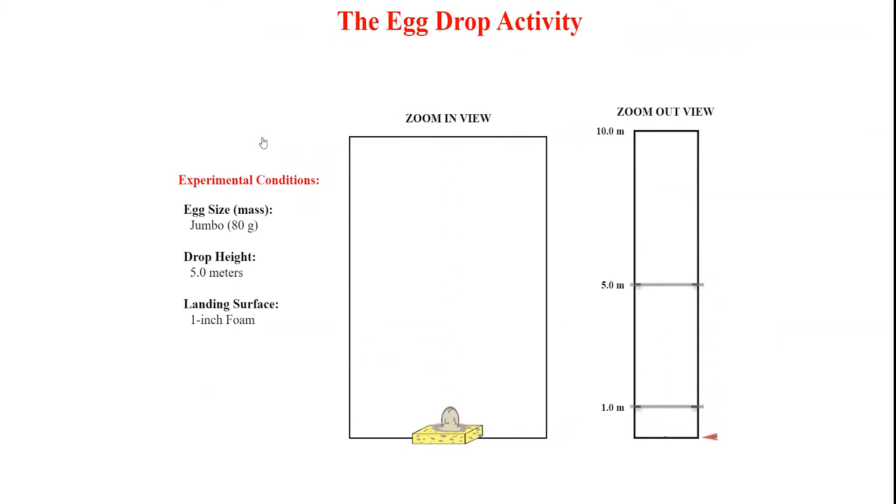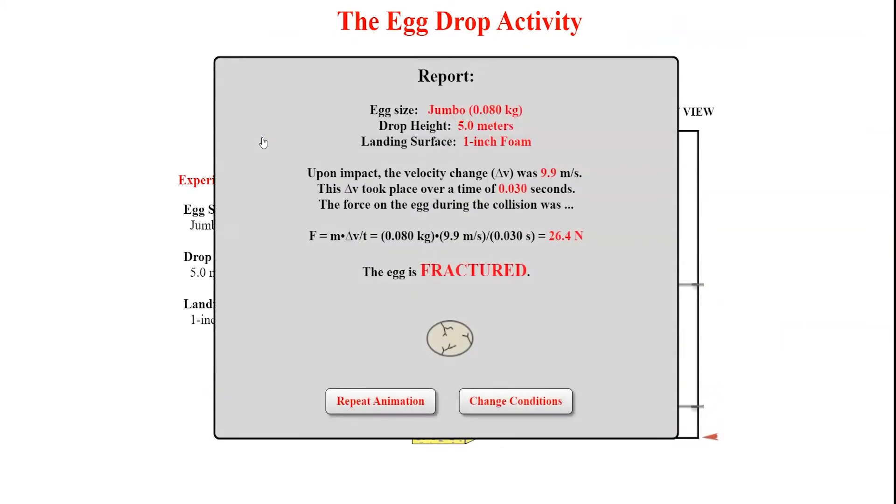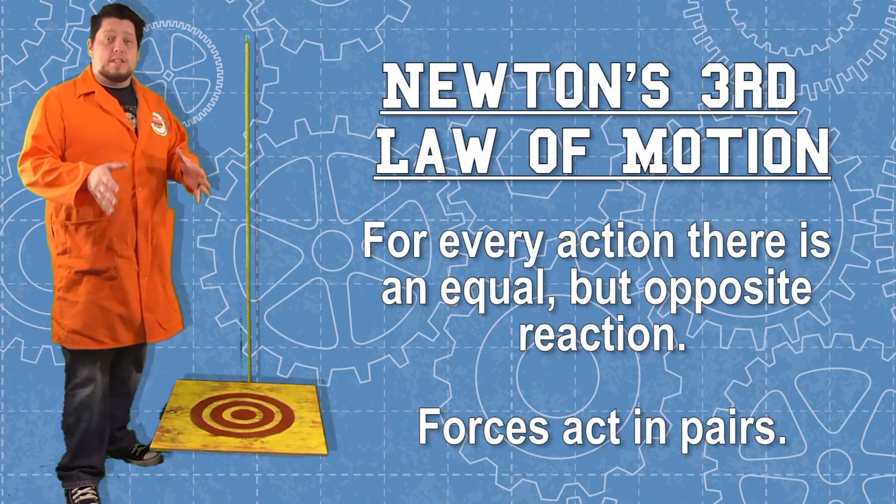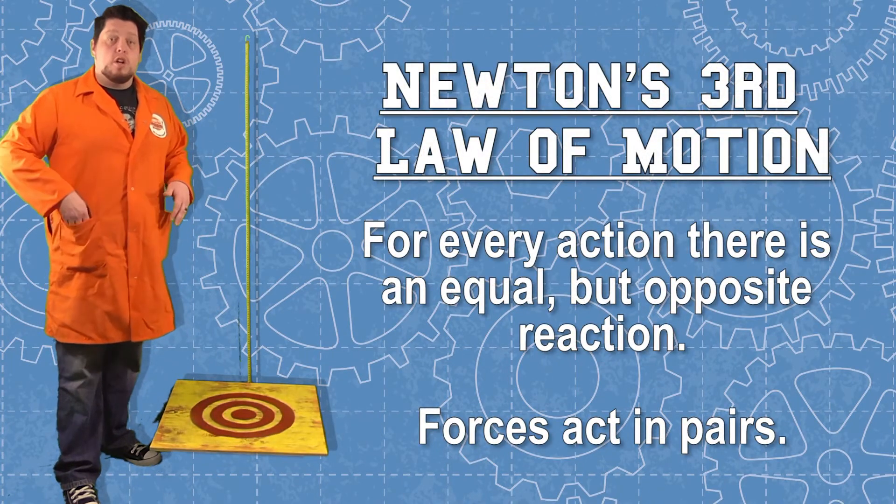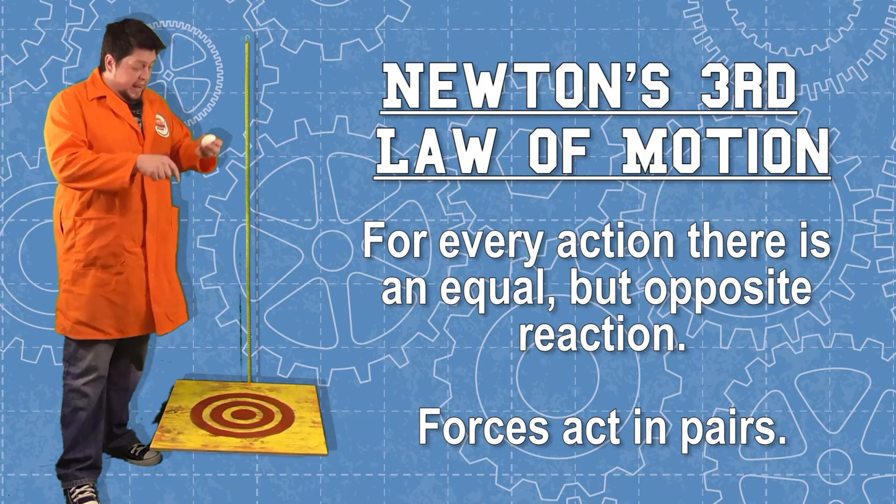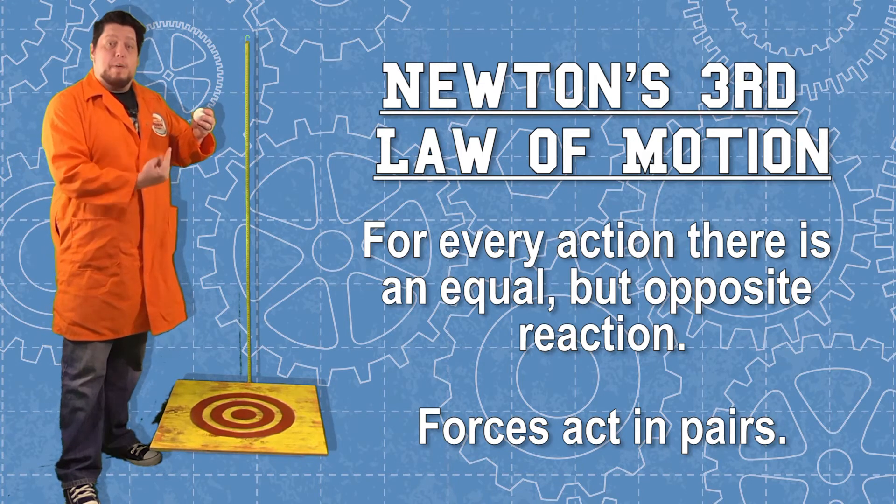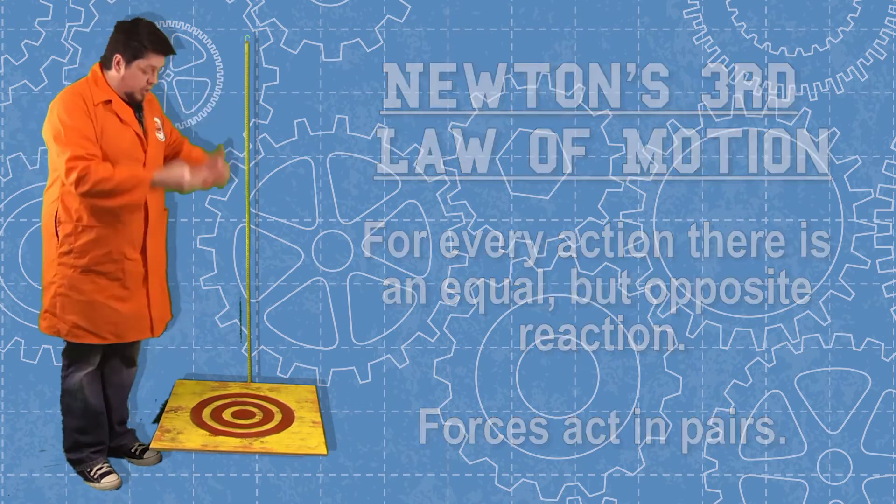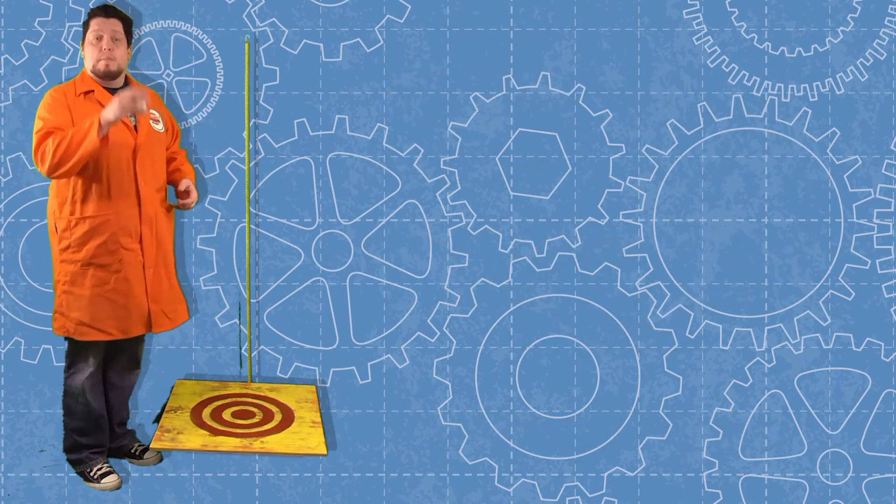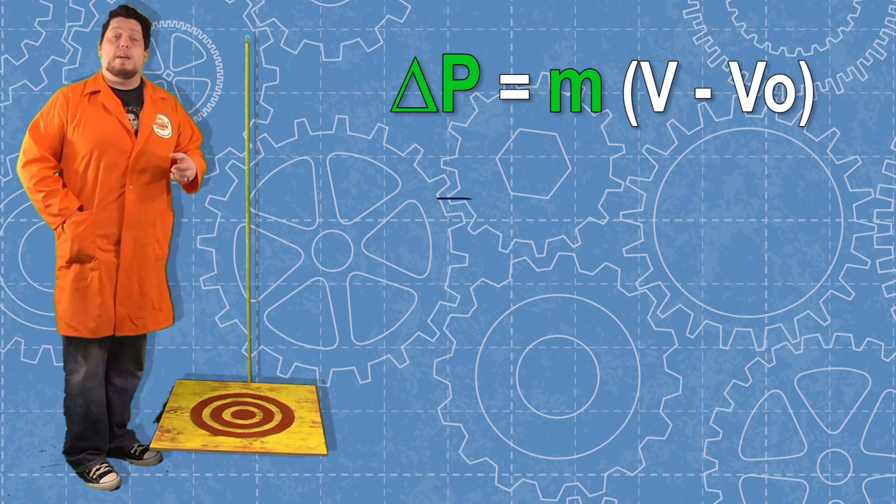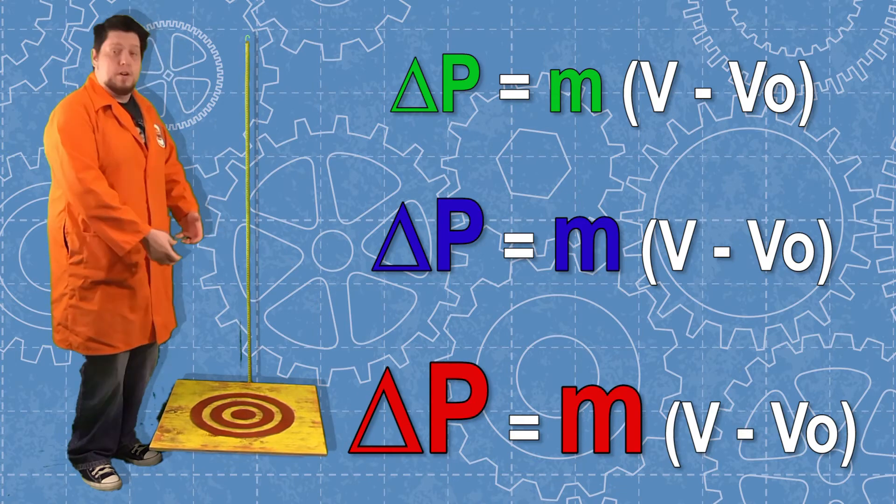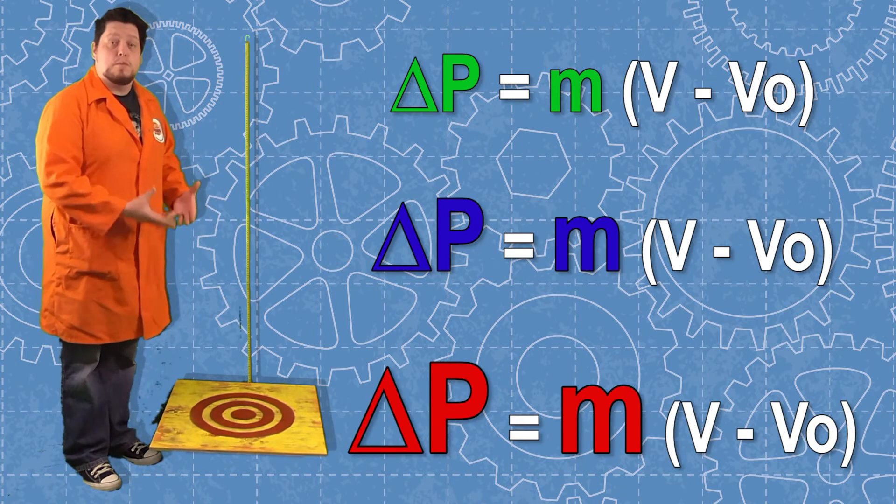According to Newton's third law, for every action, there's an equal but opposite reaction. So when the egg hits the landing pad, the landing pad hits back with the same amount of force. Now, all the eggs are going to hit the ground at the same velocity, but the mass changes the impulse. A bigger mass is going to require a bigger impulse, a bigger change in momentum to come to a stop.